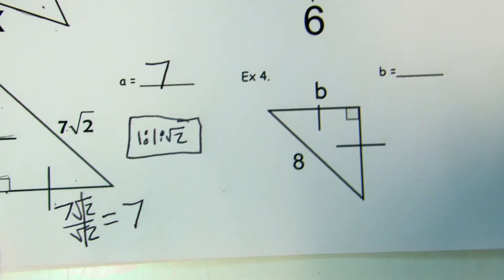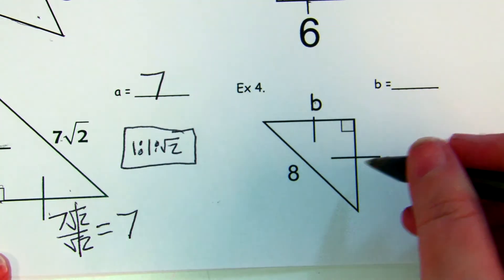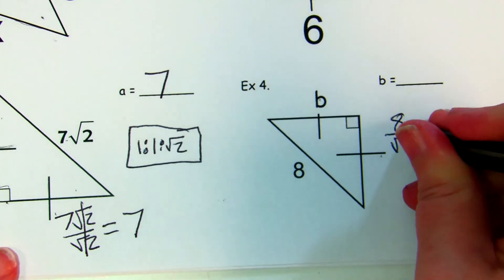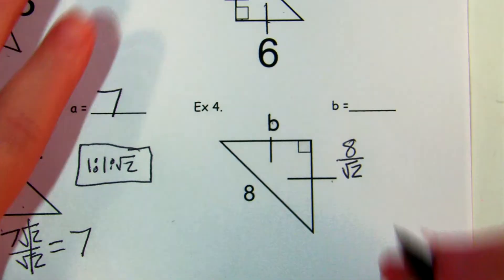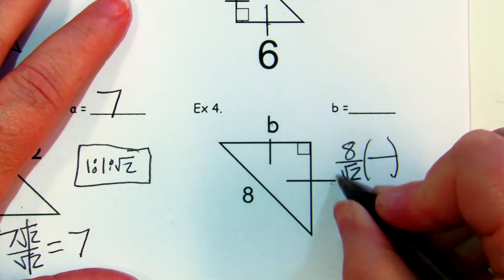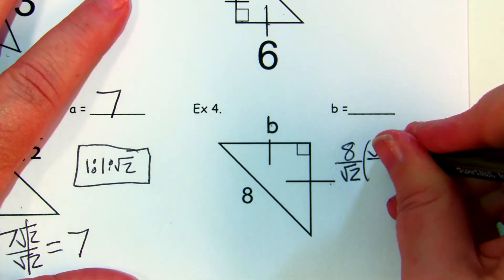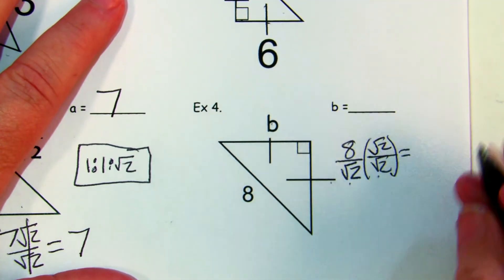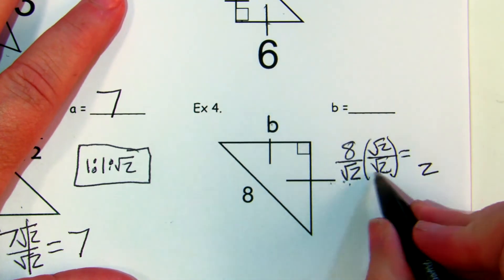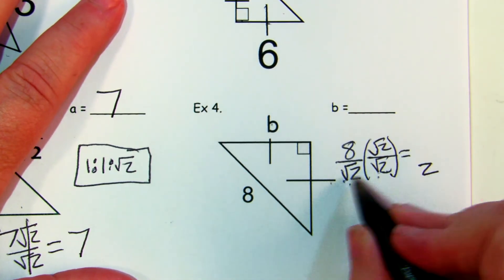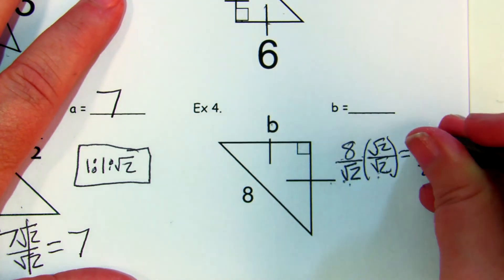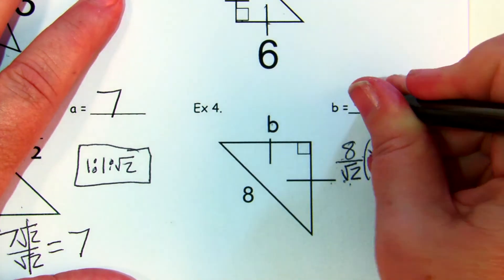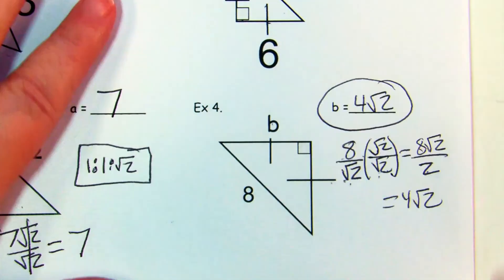Example four: the legs are b and b, and the hypotenuse is 8. You divide 8 by √2 to find the leg. We don't leave it like that — we rationalize by multiplying by √2/√2. Since √2 × √2 = √4 = 2, the denominator becomes 2, giving us 8√2 over 2, which equals 4√2.